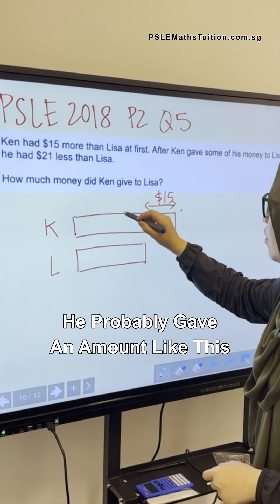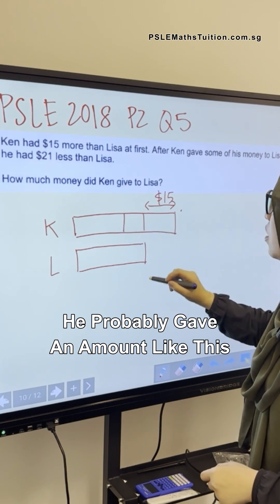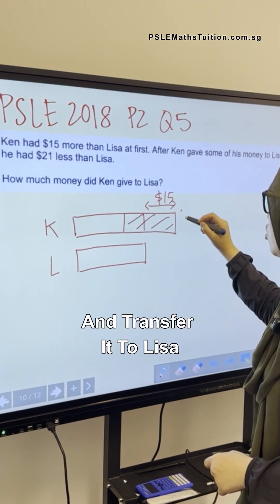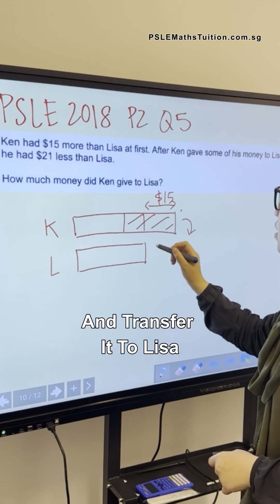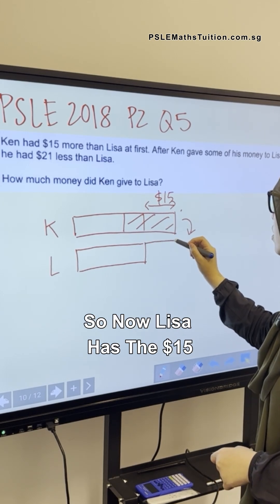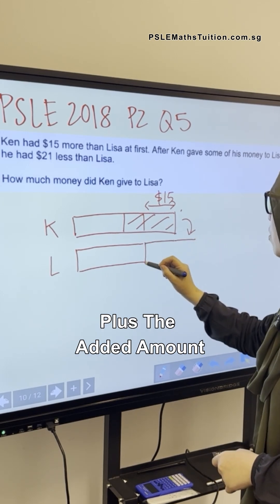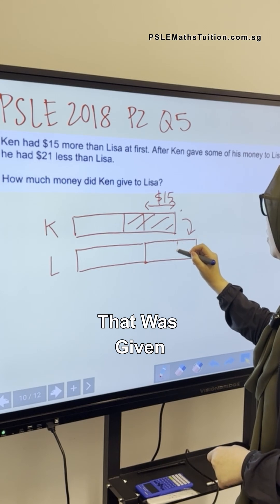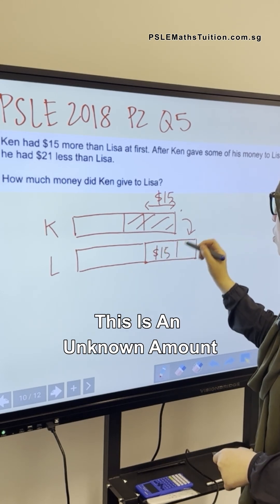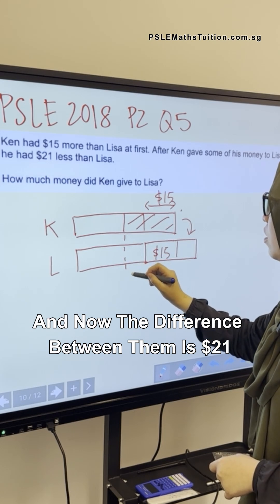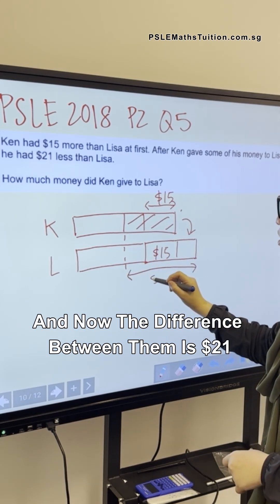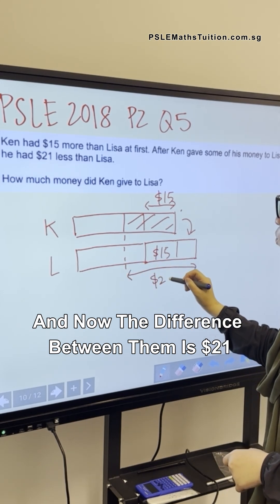He probably gave an amount like this. We can shade it and transfer it to Lisa. So now Lisa has the $15 plus the added amount that was given. This is $15, this is an unknown amount, and now the difference between them is $21.